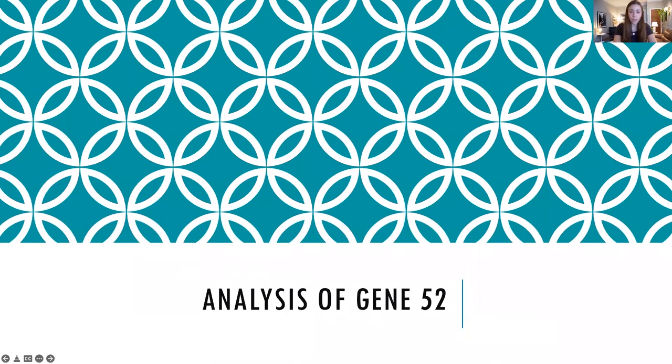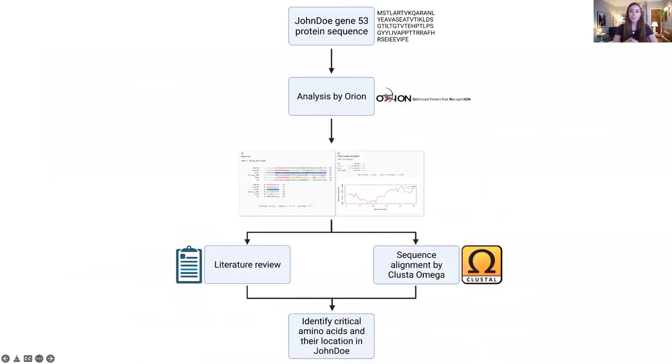Now, we will provide information regarding our research on John Doe's gene number 52. The method we used to analyze this gene was multi-sequence alignment. Here, we first obtained the protein sequence of John Doe at gene 52. We analyzed John Doe's gene 52 protein sequence using the Orion algorithm, and the picture you can see in the middle is the output of the Orion analysis. We identified one HFQ protein with over 90% coverage, and then we aligned their sequences using the cluster omega algorithm.